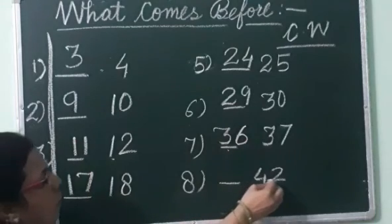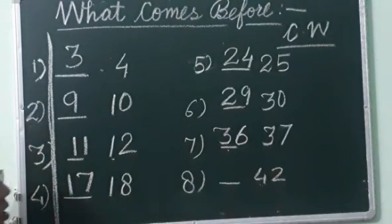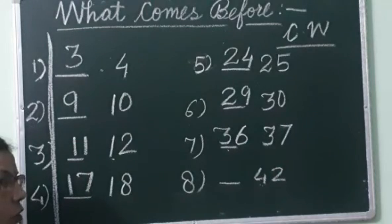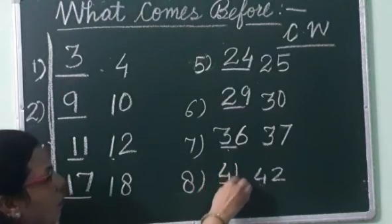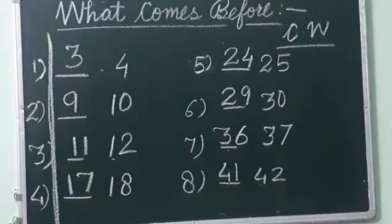Now what is the number? 42. So start from 40: 41, 42. What are we saying before 42? 41. So this you have to do in your copy. And do page number 41.